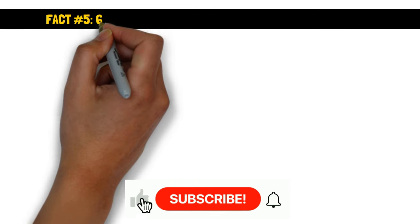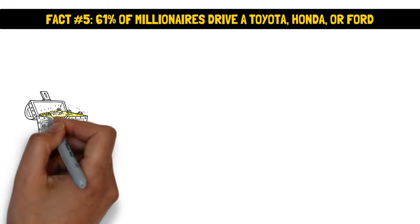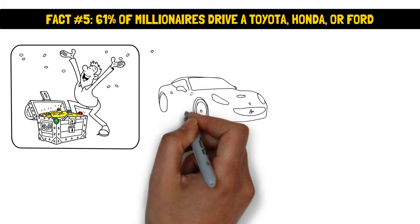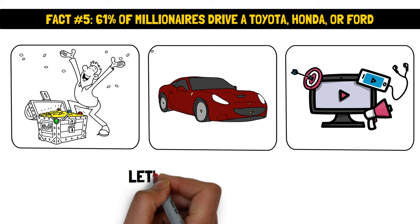Fact number five, 61% of millionaires drive a Toyota, Honda, or Ford. When you picture a millionaire, you probably have an image of someone zooming around in a Lamborghini, right? That's the stereotype social media and TV love to push. But let's burst that bubble. It's mostly smoke and mirrors.